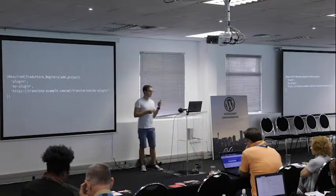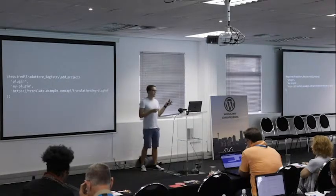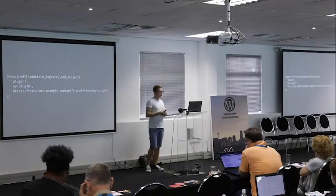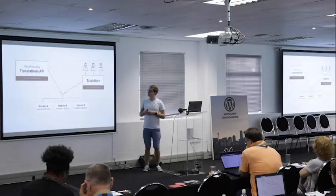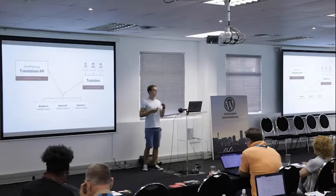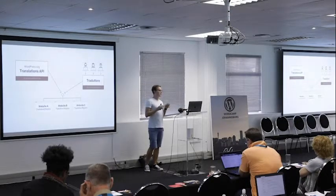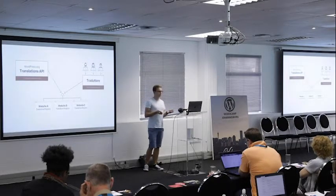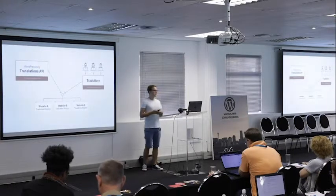The code to tell WordPress to look for translations from your own platform is as simple as a little helper script called Traditore Registry. You just specify your plugin slug — like my-dash-plugin — and point it to the API of your translation platform. All your client websites then download translations from either WordPress.org or your own platform, depending on whether it's hosted on WordPress.org or developed in private.